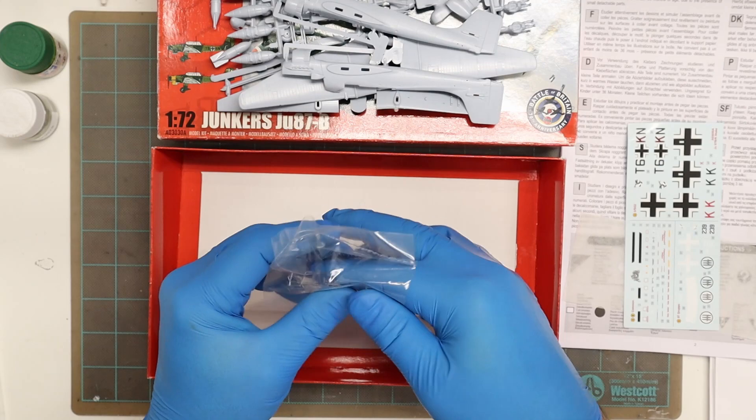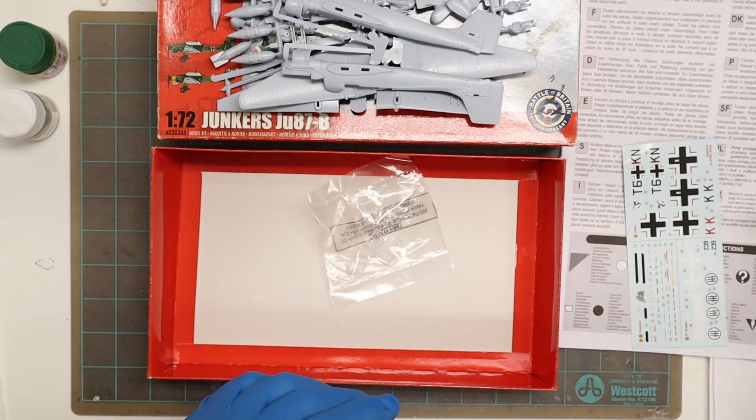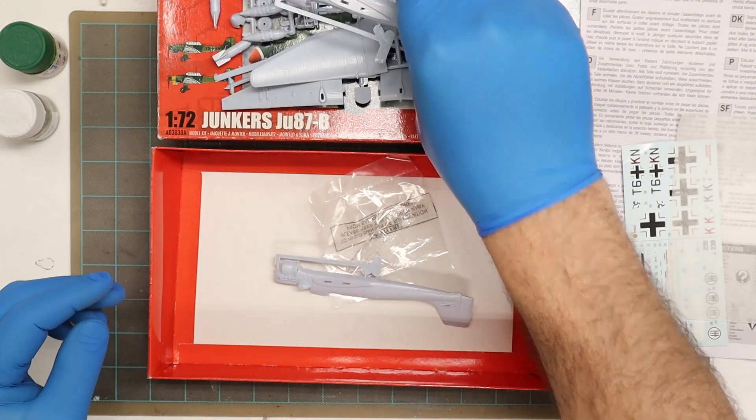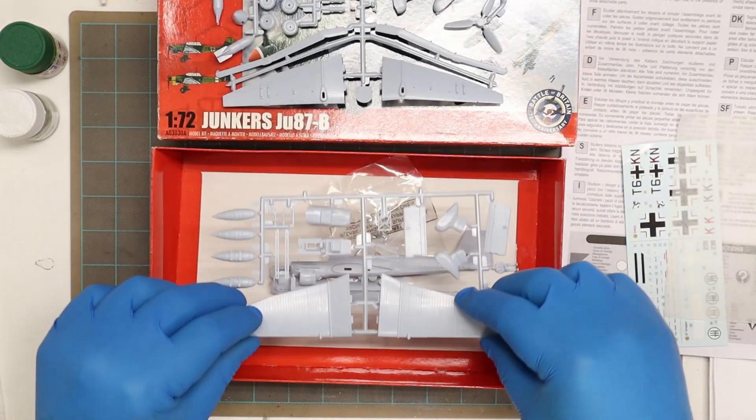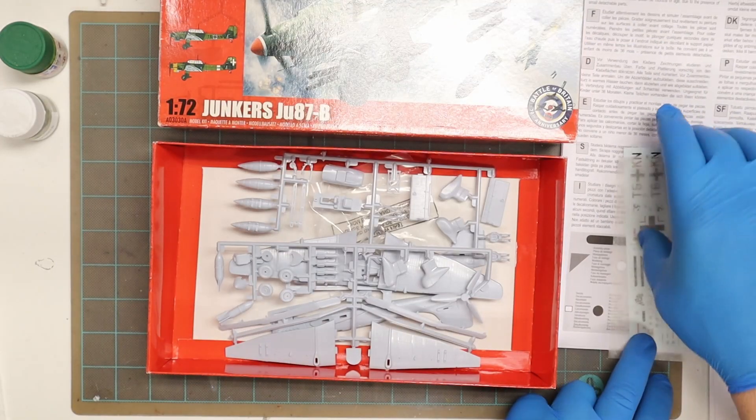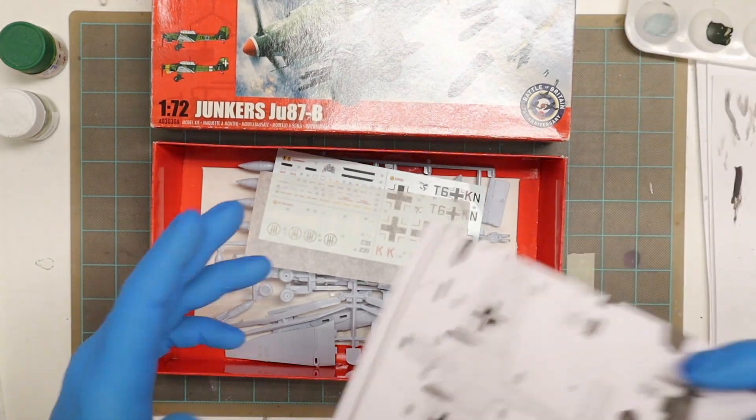Okay, so that was all the pieces there from Airfix here, Junkers Ju87. So if you stick around, I will provide you my summary along with the pros and cons.